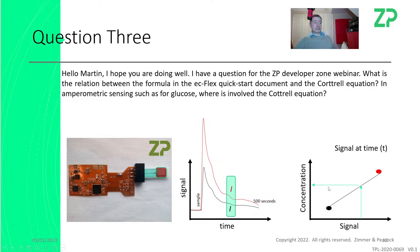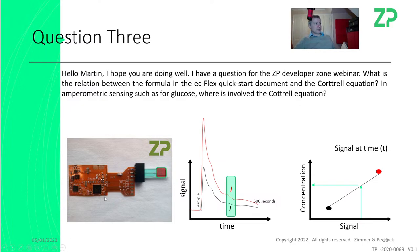This is exactly how a lot of glucose meters on the market actually work. EasyFlex is similar in size to a glucose meter — it's even the same chipset. A lot of glucose meters on the market use that same chipset, though I don't necessarily recommend it anymore because Texas Instruments isn't supporting biosensors as well as other companies are. Most glucose meters: the sample comes to the sensor, the signal they get is a Cottrell-type response, and they choose a time — about five seconds.